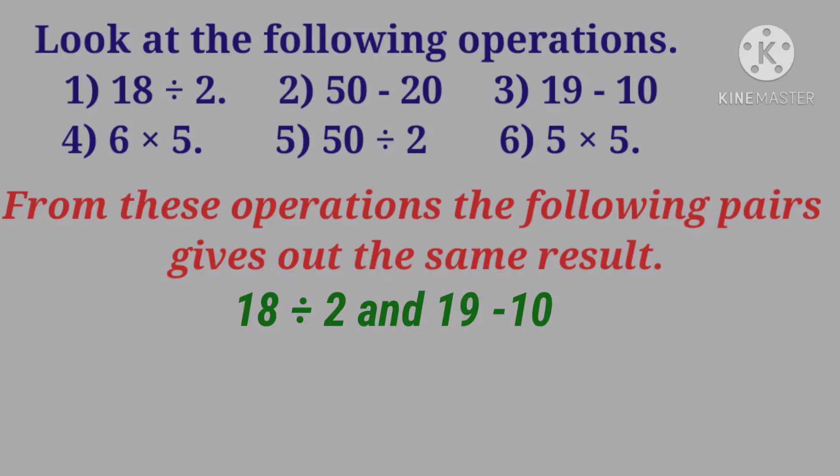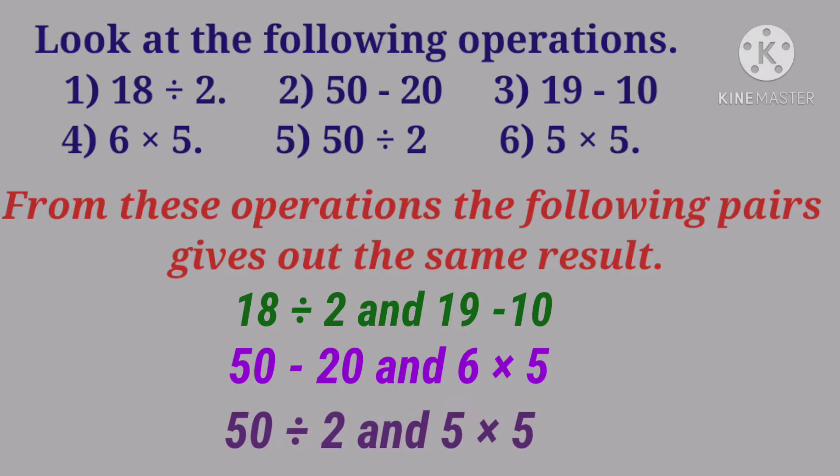The second one is 50 minus 20 and 6 multiplied by 5, and the third one is 50 divided by 2 and 5 multiplied by 5. These pairs give the same result.